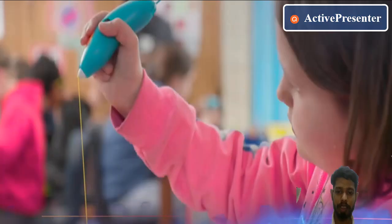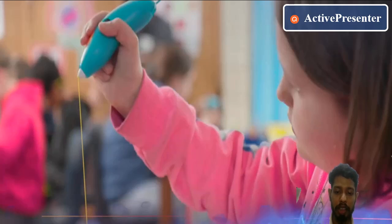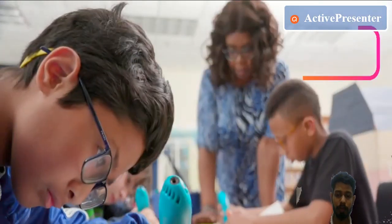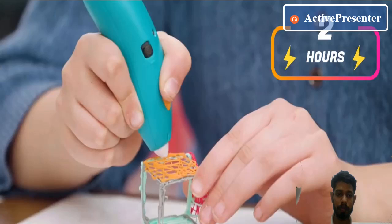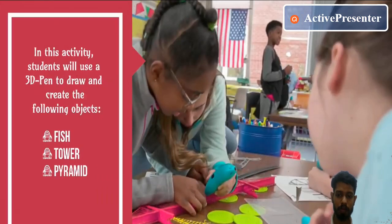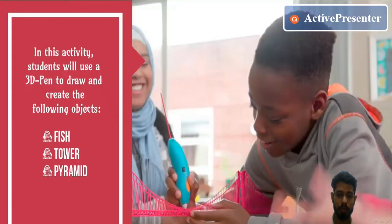For the 3D pen competition, we are going to use a 3D pen to make new objects out of filament. We will teach you about this in depth in the upcoming sessions. Three members per team, two hours. In this activity, students will use a 3D pen to draw and create the following objects: fish, tower, and pyramid. Prizes, medals, and shields will be awarded based on the criteria of most creative output, efficient and complete completion by the group, and first group to finish.